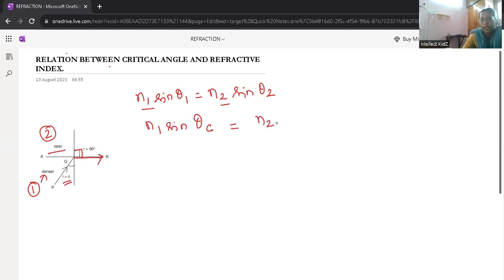And then N2 is applied, sin of theta 2 is 90 degrees. The refraction occurs at 90 degrees. What is the value of sin 90? It is 1.